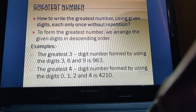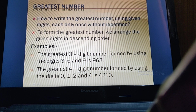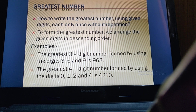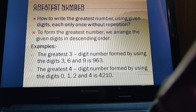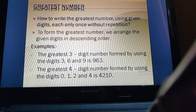So the digits in descending order are 9, 6, 3, giving us 963. Now for the greatest four-digit number using digits 0, 1, 2, and 4 — note there is a zero here. When making the greatest number, whether three-digit or four-digit, we always place zero at the end.